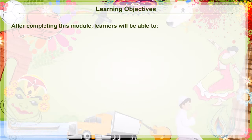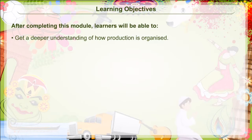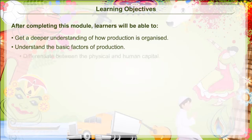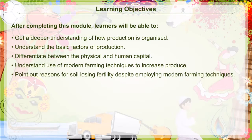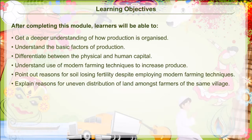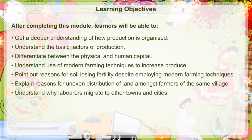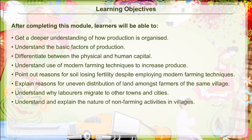Learning Objectives: After completing this module, learners will be able to get a deeper understanding of how production is organized, understand the basic factors of production, differentiate between physical and human capital, understand the use of modern farming techniques to increase produce, point out reasons for soil losing fertility despite employing modern farming techniques, explain reasons for uneven distribution of land amongst farmers of the same village, understand why laborers migrate to other towns and cities, and understand the nature of non-farming activities in villages.